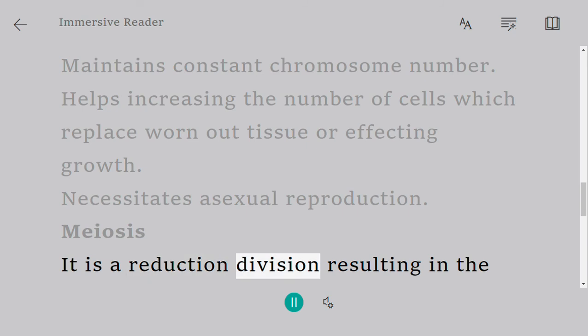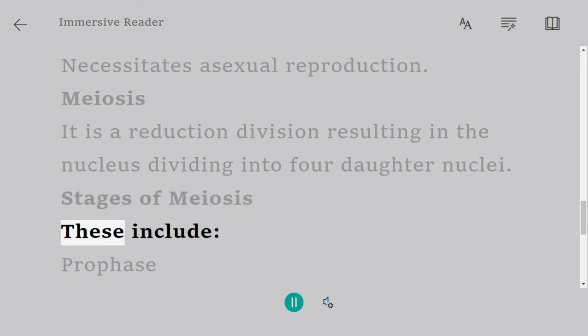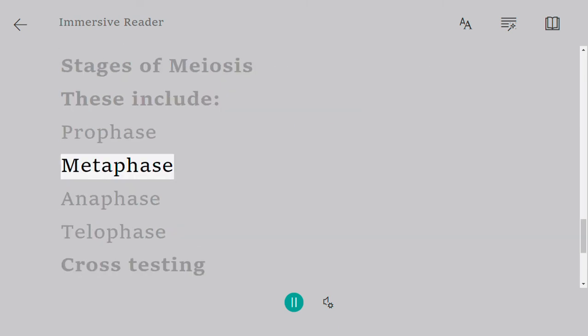Meiosis is a reduction division resulting in the nucleus dividing into four daughter nuclei. Stages of meiosis include: prophase, metaphase, anaphase, and telophase.